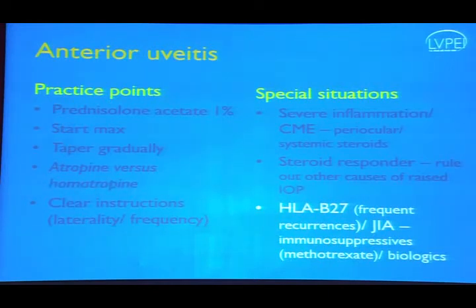In patients with HLA-B27 associated anterior uveitis and juvenile idiopathic arthritis, think of immunosuppressives; methotrexate is very useful in these conditions, and in very advanced situations biologics may also be needed.